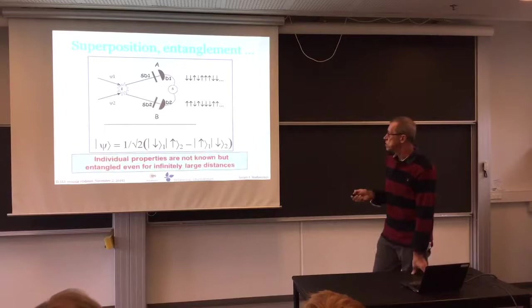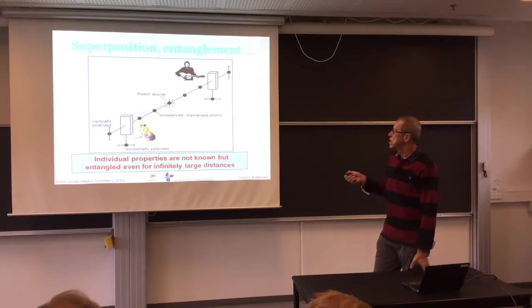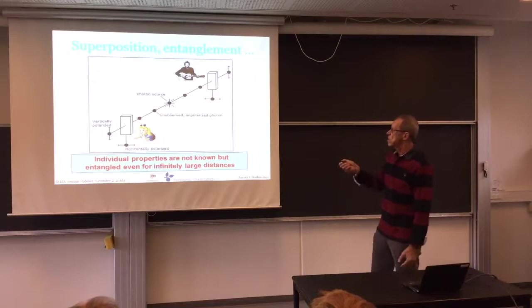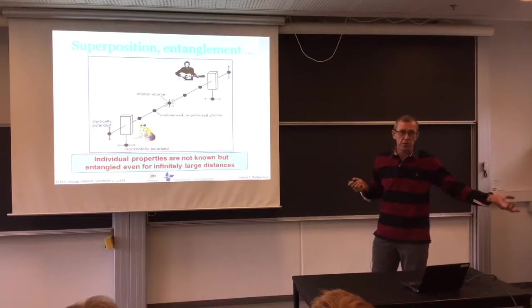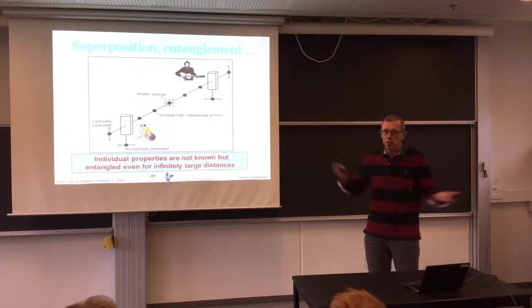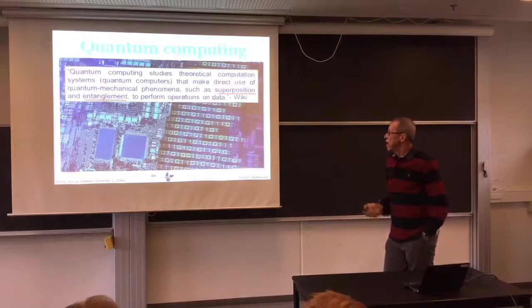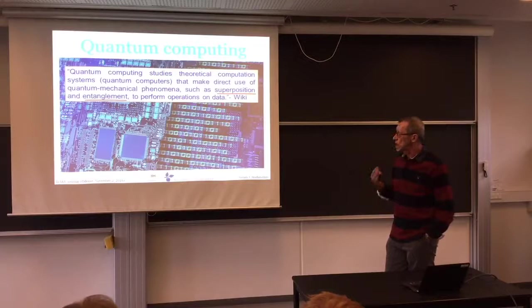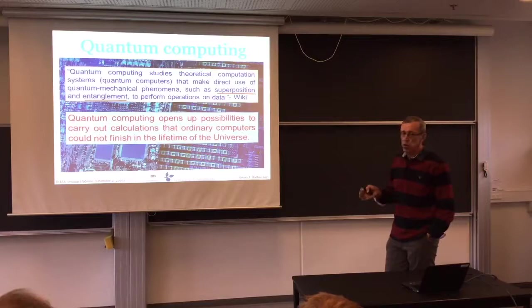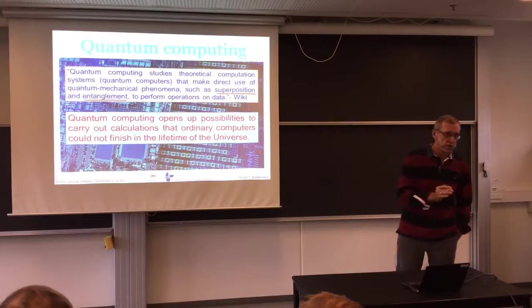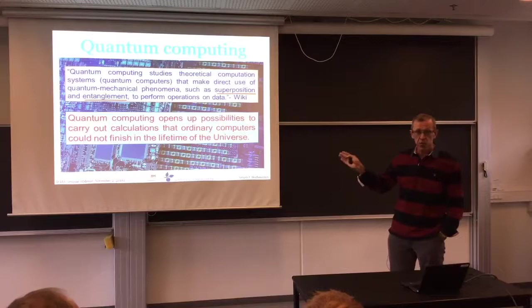Entanglement can be used for computations which ordinary computers — no matter how fast — would need the lifetime of the universe to finish. That's the point. If you can entangle two particles, measuring one immediately determines the other. Do they communicate at speeds larger than light? This is something very difficult to accept with ordinary logic. That's why quantum computers can do calculations that classical computers simply cannot.